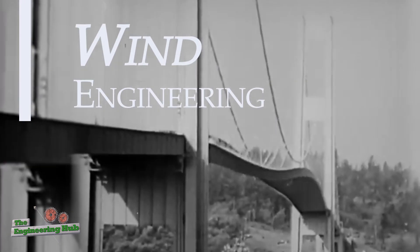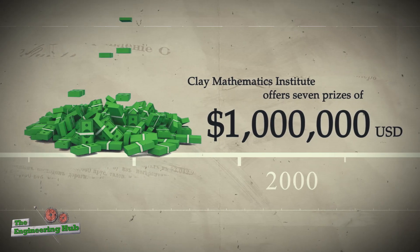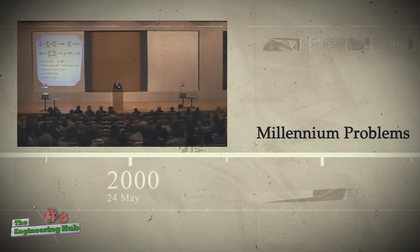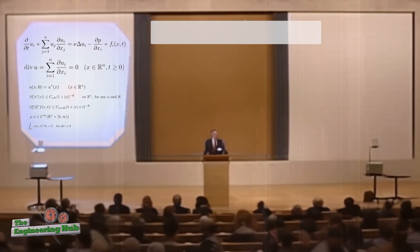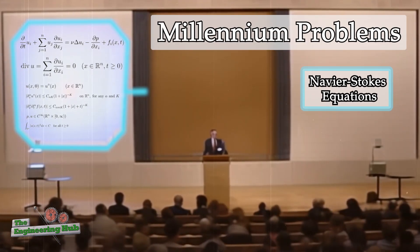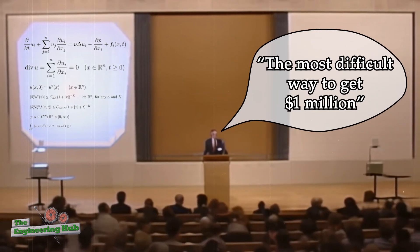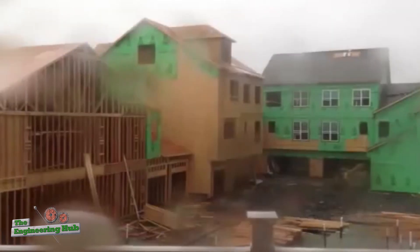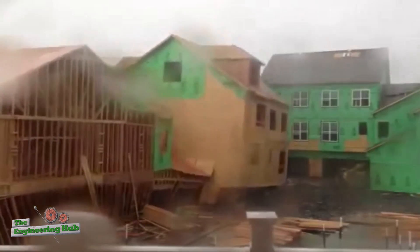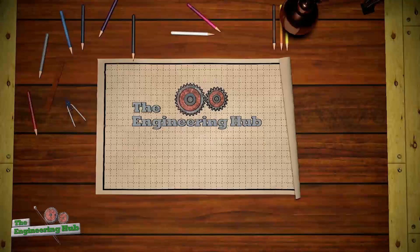In the year 2000, the Clay Mathematics Institute offered several 1 million US dollar prizes for solutions to what they called Millennium Problems. One of these problems was fully solving the equations for wind motion and turbulence. The equations apply to fluids in general too. Still today, nearly a quarter century later, no one has fully solved these complicated equations for wind. And yet, we do still have effective ways for building to resist wind, most of the time at least. My name is Hafiz, and welcome to the Engineering Hub.